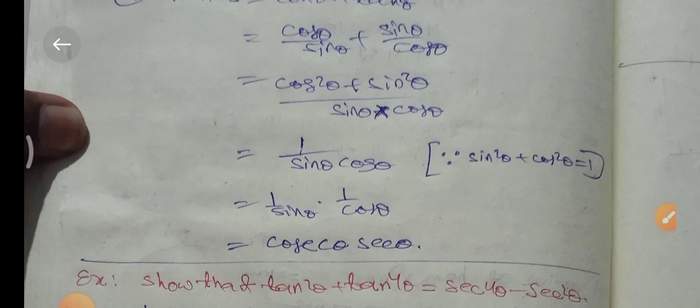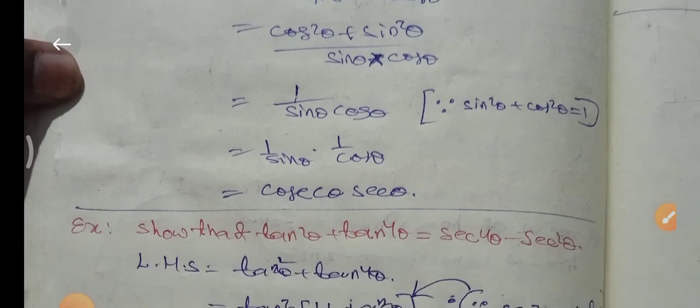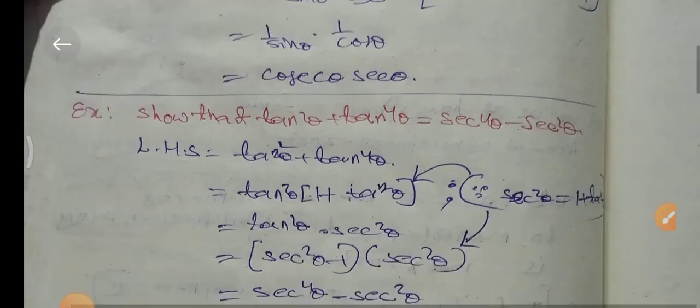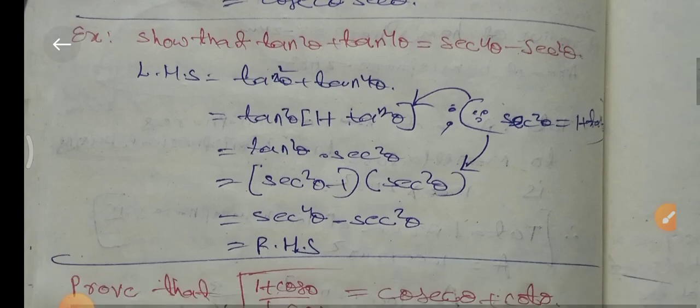Therefore 1 over sin θ cos θ equals 1 over sin θ times 1 over cos θ, which equals cosec θ times sec θ. Since 1 over sin θ is cosec θ and 1 over cos θ is sec θ, the left hand side equals cosec θ times sec θ, which is the right hand side. Hence proved.